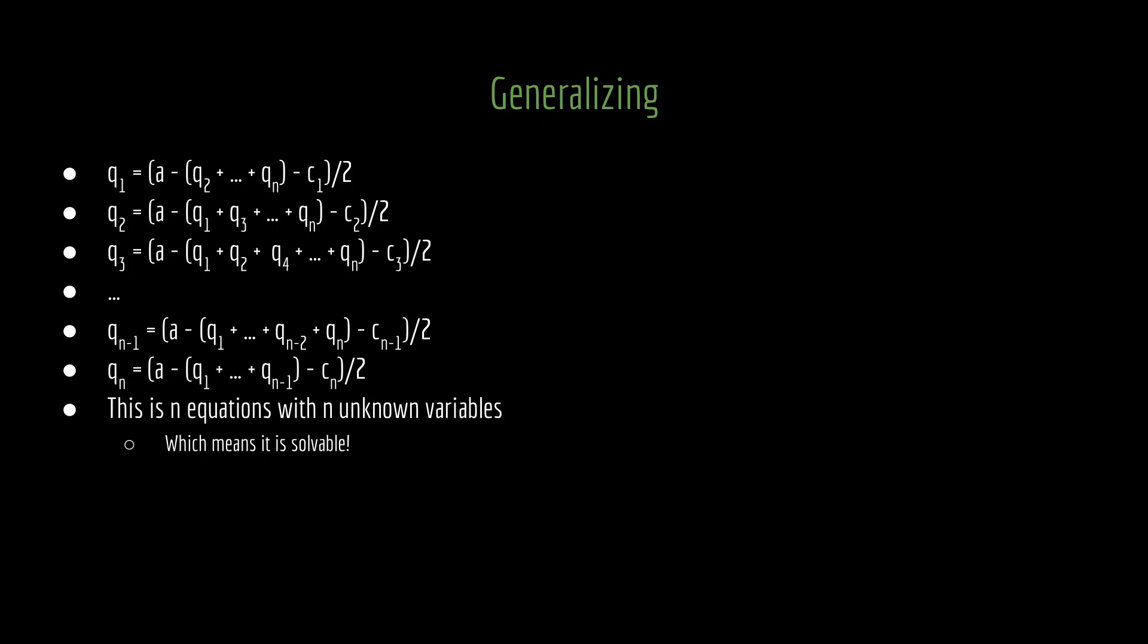This is the best response function for each of the n firms. You will notice that means we have n unique equations with n unknown variables. And if you remember back to your high school algebra classes, when you have n equations with n unknowns, you can solve that. That is a system of equations that is solvable. In principle, we can derive an equilibrium by just finding the values of q1, q2, q3, and so forth that satisfy each of these equations.